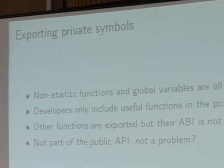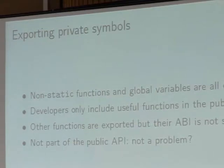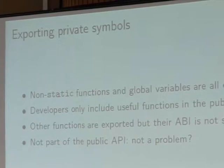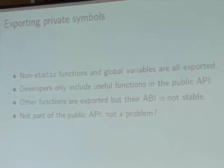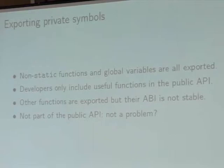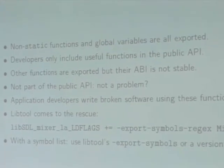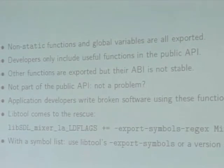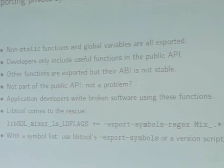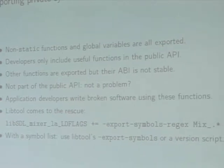Another common mistake is to export all symbols defined in the C code, because every function and variable you write in your library, if it is not declared static, is exported. But you don't necessarily want this function to be part of the public API. The drawback is you don't put it in the .h file, so you might think nobody will use them — but that's just wrong. People use them. As long as there is a loophole, application developers will define the function themselves and then use it from the shared library, and of course it is entirely broken.